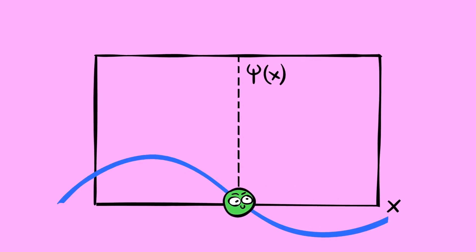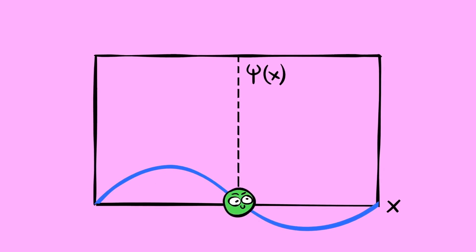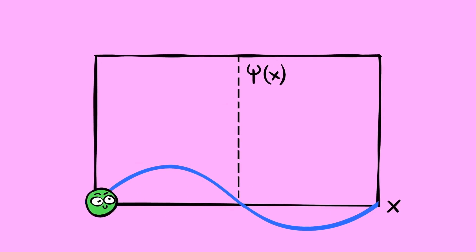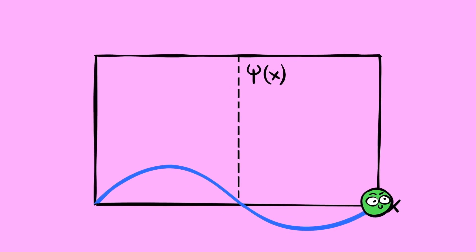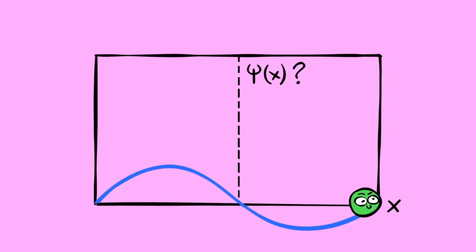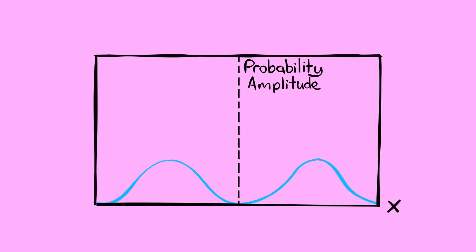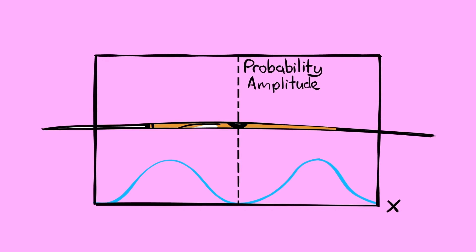No, it describes something totally different. The x-axis describes where the electron can be in space. But what about the y-axis — what does the value of the wave function physically mean? Well, when we square the value of the wave function, for reasons I'll explain later, this gives us something called the probability amplitude. The probability amplitude can be thought of as a wave of probability. It describes the likelihood of finding the electron in a given place if we were to look for it there.